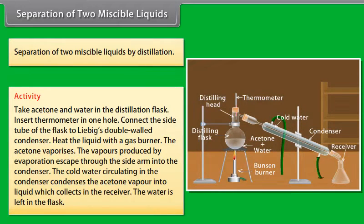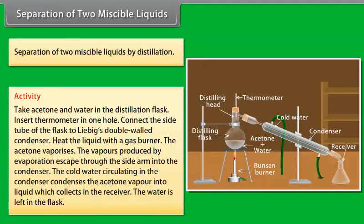Take acetone and water in the distillation flask. Insert a thermometer in one hole. Connect the side tube of the flask to a Liebig double-walled condenser.